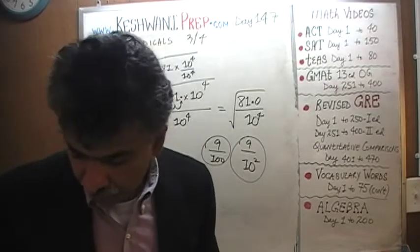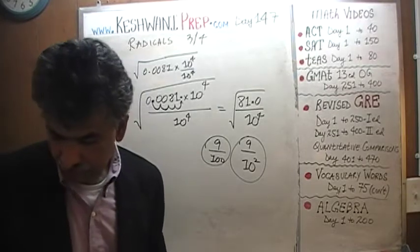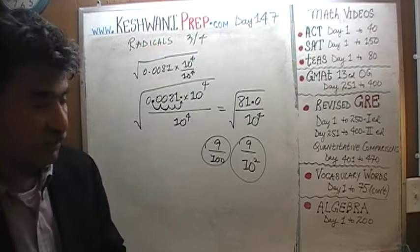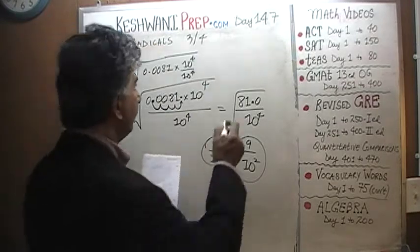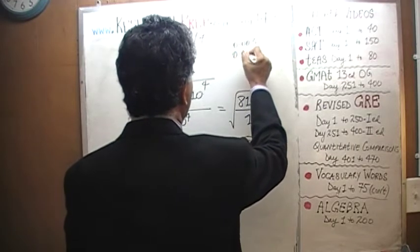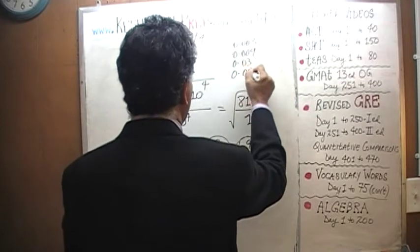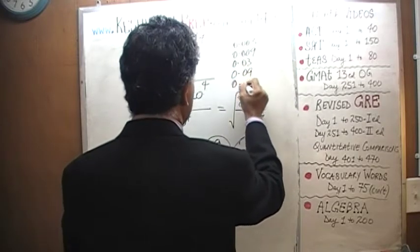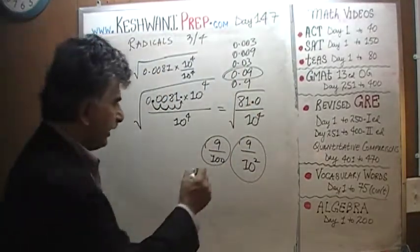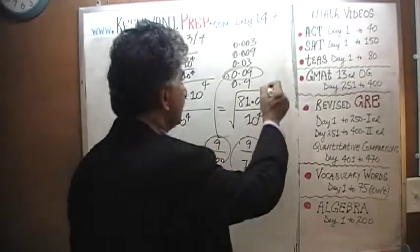Oh, blast it — I forgot to give you the answer choices at the beginning. It's too late now, but in case you're curious how the answer choices would be laid out on the exam, they were: 0.003, 0.009, 0.03, 0.09, and 0.9. Ours was 0.09, because we got 9 over 100 which is 0.09. Answer choice D was the right answer.